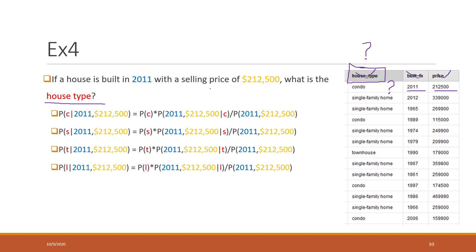To answer that, we know there are four types of houses: condo, single family home, townhouse, and land or lot. So we need to calculate the probability for each type of house — each possible category of our target label. First, we calculate P(house is condo | built in this year and at this price).